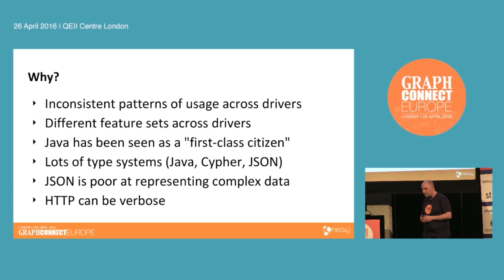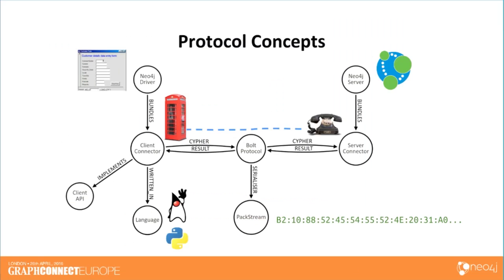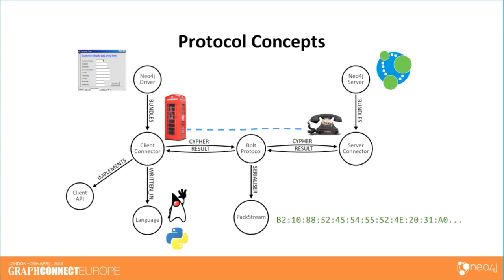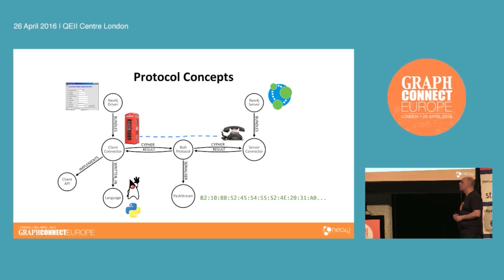This illustrates, with a few very British telephone references, basically what we've been trying to build. The protocol itself is implemented by connectors on either side of the communication. One connector sits in the driver itself, which acts on behalf of the application. The other connector sits in the Neo4j server. They exchange Cypher messages going to the server and the results, which are streams of records, coming back again.